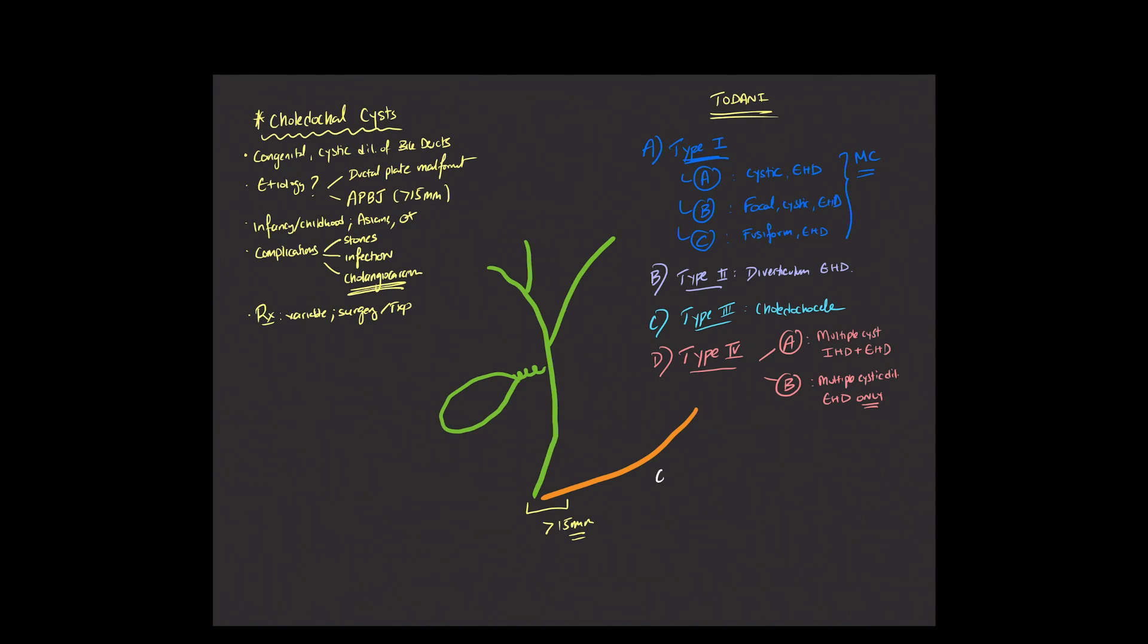And finally, we have the type 5 choledocal cyst in the Todani classification. This is also known as Caroli's disease. And in this instance, you're going to see multiple regions of saccular or cystic dilatation involving the intrahepatic bile ducts. It can be diffusely involving the ducts, involving a certain segment or a certain hepatic lobe.